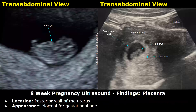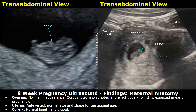At eight weeks you can see the placenta in this image. It appears as a hyperechoic thick structure along the gestational sac wall. The location in this example was the posterior wall of the uterus. The appearance is normal.